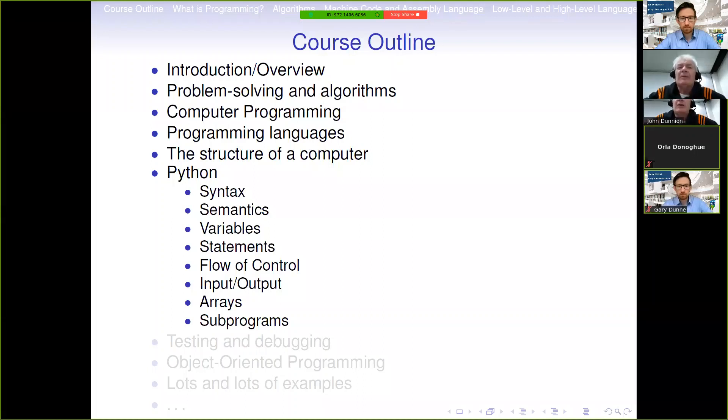In order to understand properly how programming languages work and how programming works, we need to talk a little bit about the structure of a computer as well. When we're talking about a particular language, here I mention Python, but actually in first year students cover C, the C programming language. You talk about syntax, which is what the language looks like, how it appears on paper or on the screen. Semantics, in other words what the language actually means, what the instructions actually do.